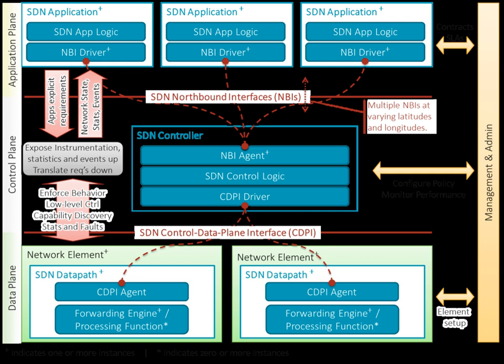SDN northbound interfaces (NBIs) are interfaces between SDN applications and SDN controllers that typically provide abstract network views and enable direct expression of network behavior and requirements. This may occur at any level of abstraction and across different sets of functionality. One value of SDN lies in the expectation that these interfaces are implemented in an open, vendor-neutral, and interoperable way.